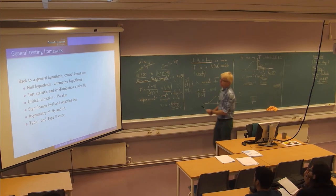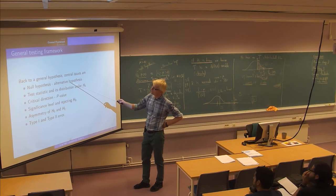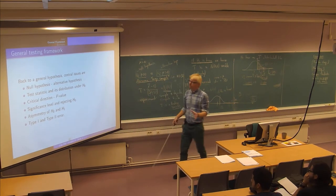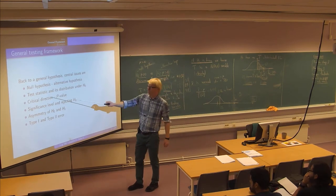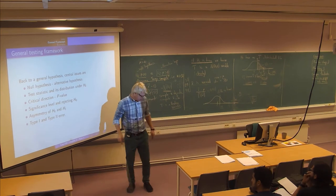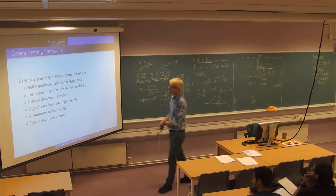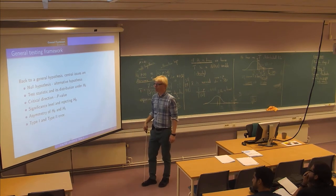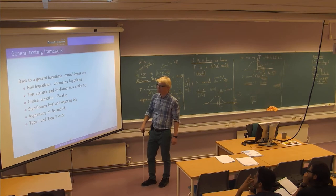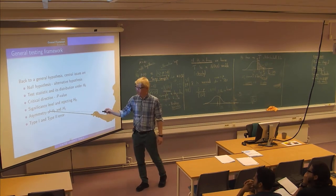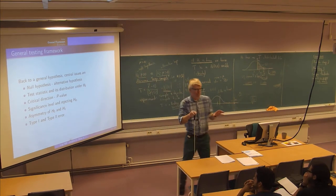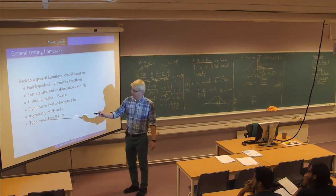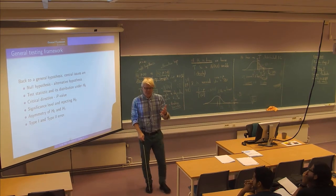We're going to be more general about the null hypothesis and the alternative hypothesis. The test statistic will differ according to what kind of parameters we're dealing with and sample sizes. We need to discuss something called critical direction relating to p-values, something called significance level, and the fact that h-zero and h1 play asymmetrical roles. We'll also discuss briefly the types of mistakes we can make when we decide in a hypothesis test.